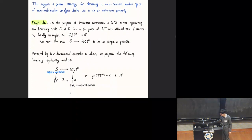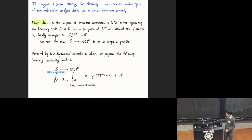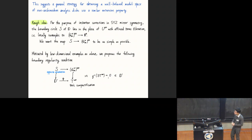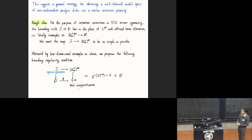Motivated by the low-dimensional examples, we propose the following boundary regularity condition. We ask that our circle, which already maps to this standard toric domain, extends in the opposite direction to a disk, such that the map extends to a map from the opposite disk to some toric compactification, and it touches the toric boundary only at zero. The toric compactification really doesn't matter, because eventually it touches the toric compactification at only one point—so whatever compactification is fine.